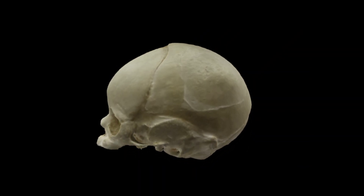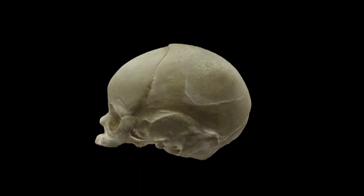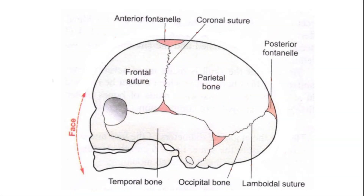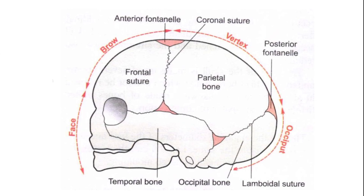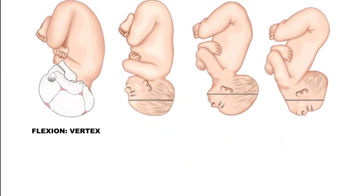Next, from the lateral view, we have the face, which is the area between the chin and root of the nose, i.e. glabella. Next, from the root of the nose to the anterior fontanel, it is called Brow. From the anterior fontanel to posterior fontanel is called Vertex, and the most prominent part of the occipital bone is known as Occiput.